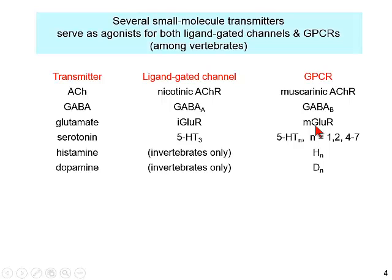Serotonin has an enormous diversity of GPCRs, and one ligand-gated channel — the 5-HT3 receptor. Among invertebrates, histamine activates ligand-gated channels, and among both invertebrates and vertebrates it activates GPCRs. Among vertebrates, dopamine activates GPCRs, but among invertebrates it also activates ligand-gated channels. So this pattern in which an organism has both types of receptors is rather common in neuroscience.